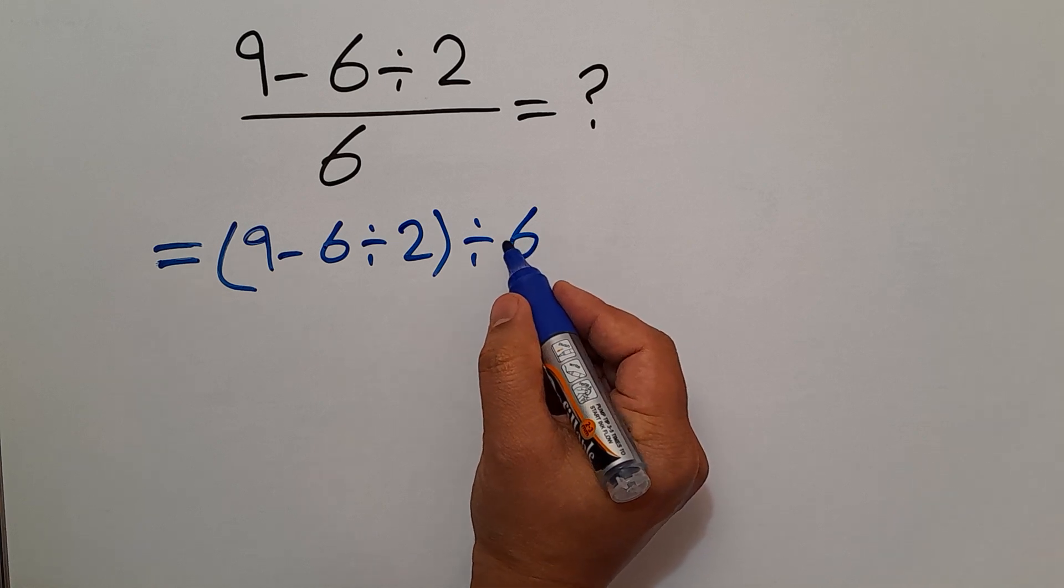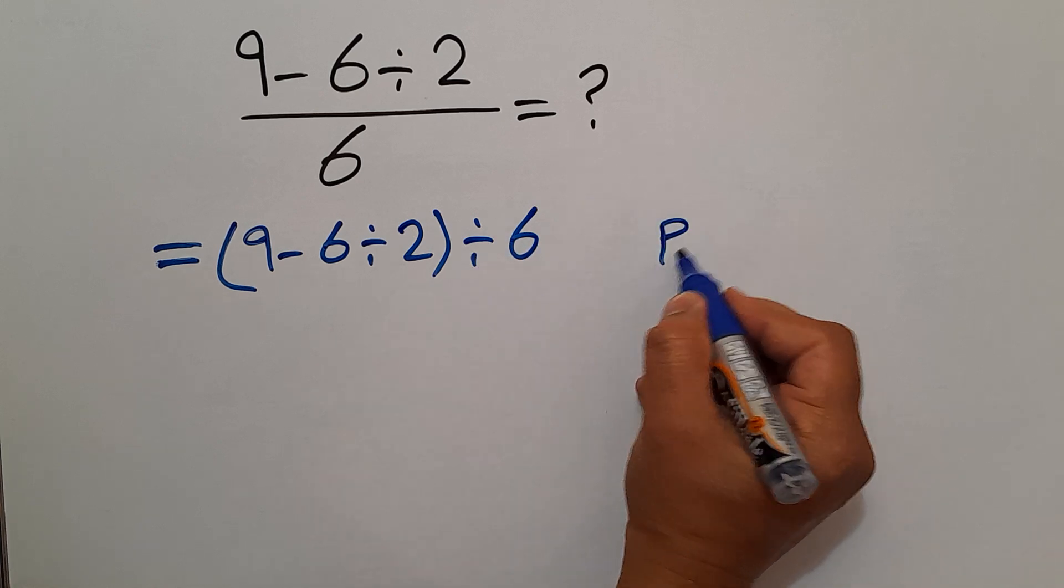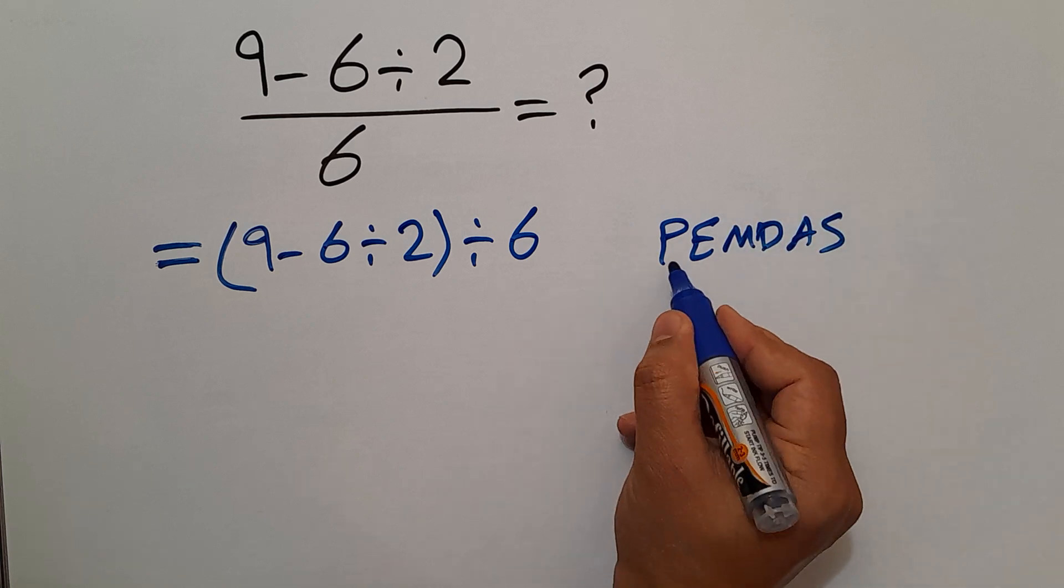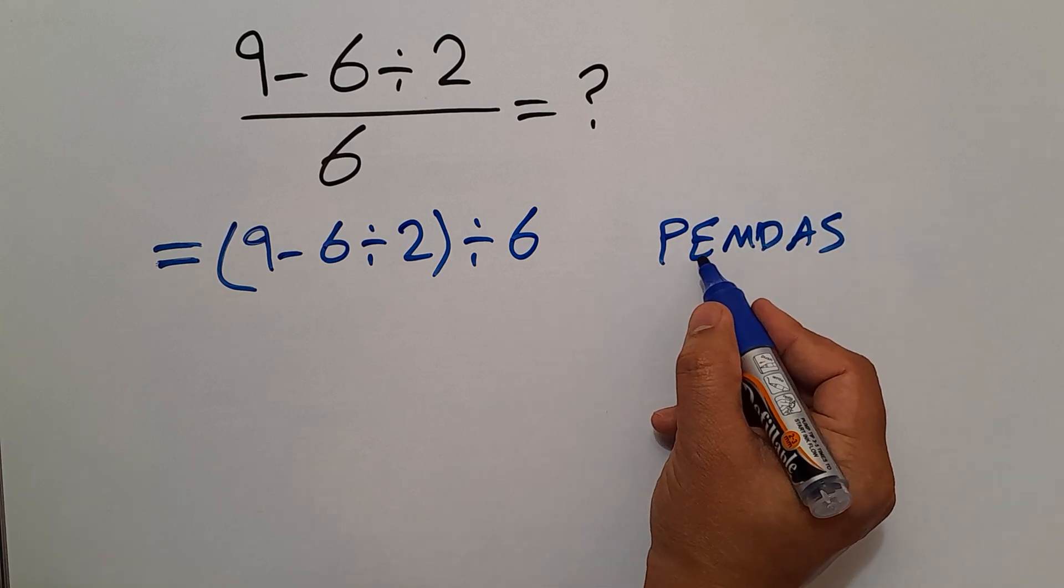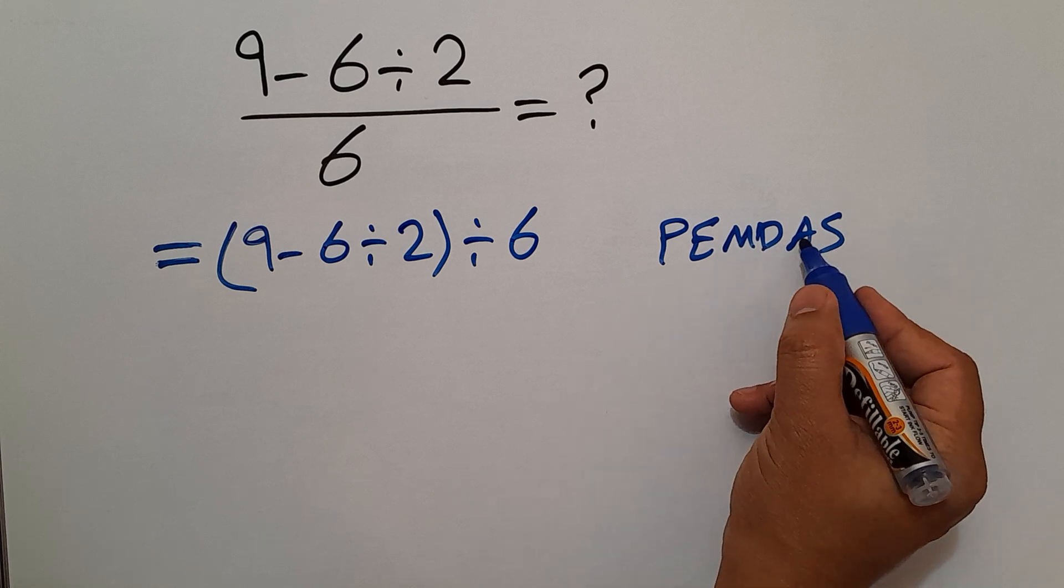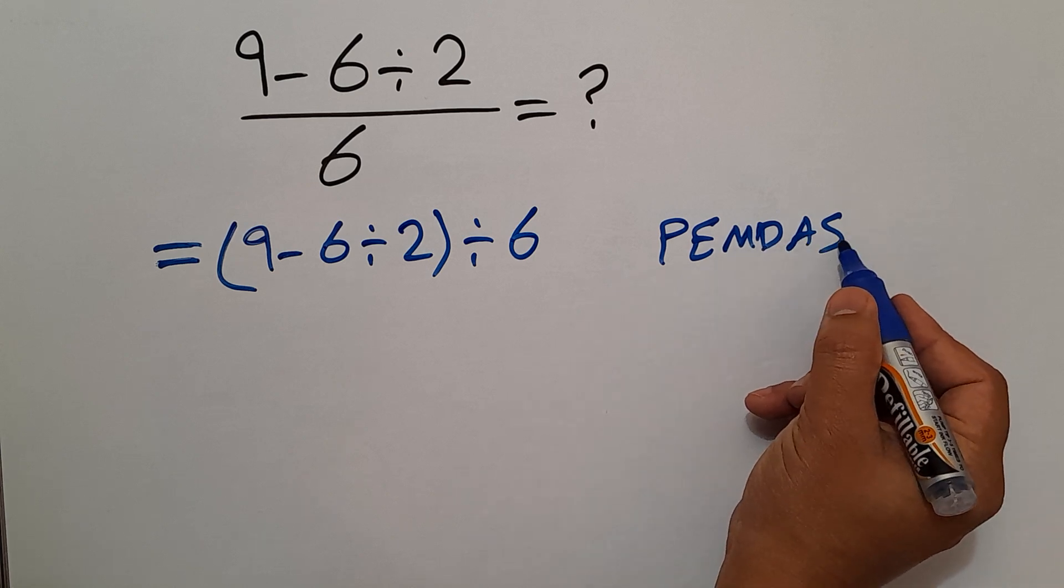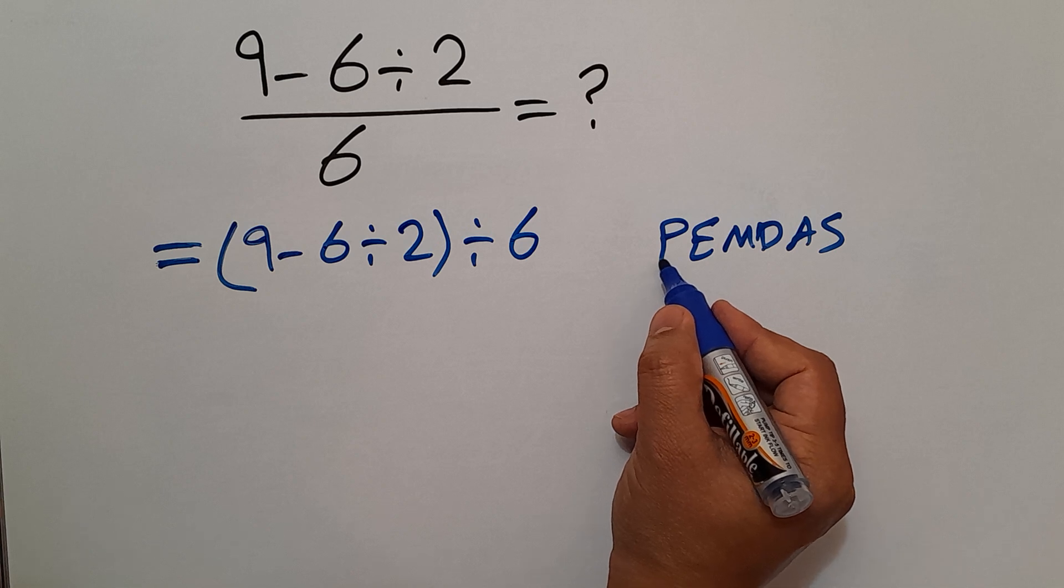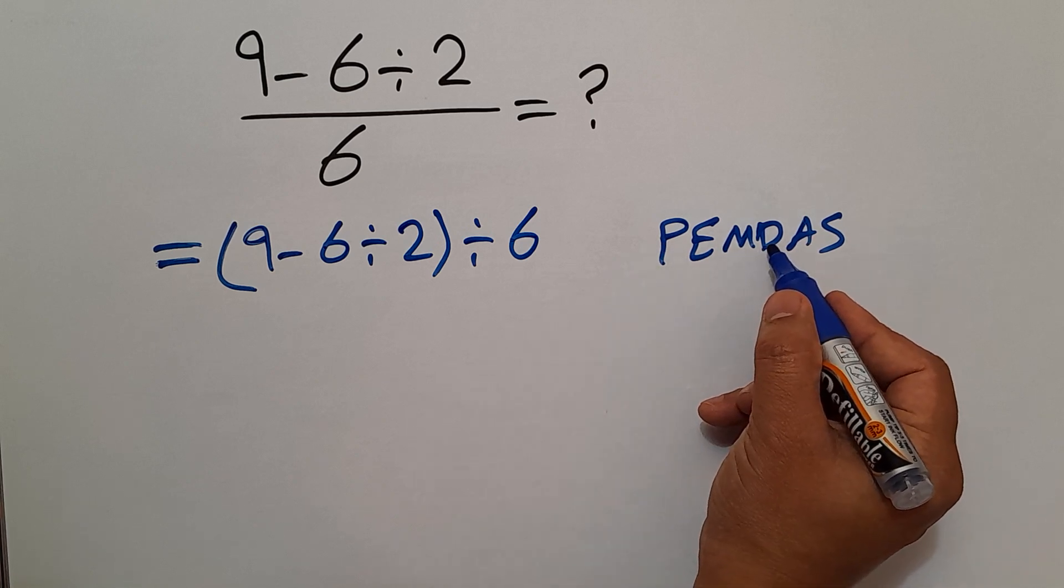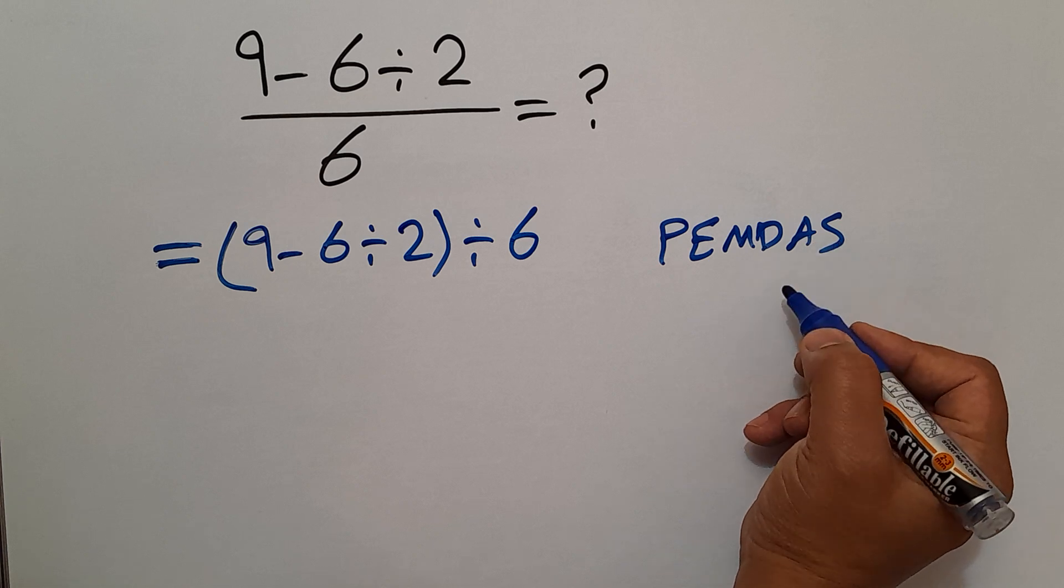Now, according to the order of operations, which is PEMDAS, P stands for parentheses, E stands for exponents, M and D stands for multiplication and division, and A and S stands for addition and subtraction. We first do parentheses, then exponents, then multiplication and division, and finally addition and subtraction.